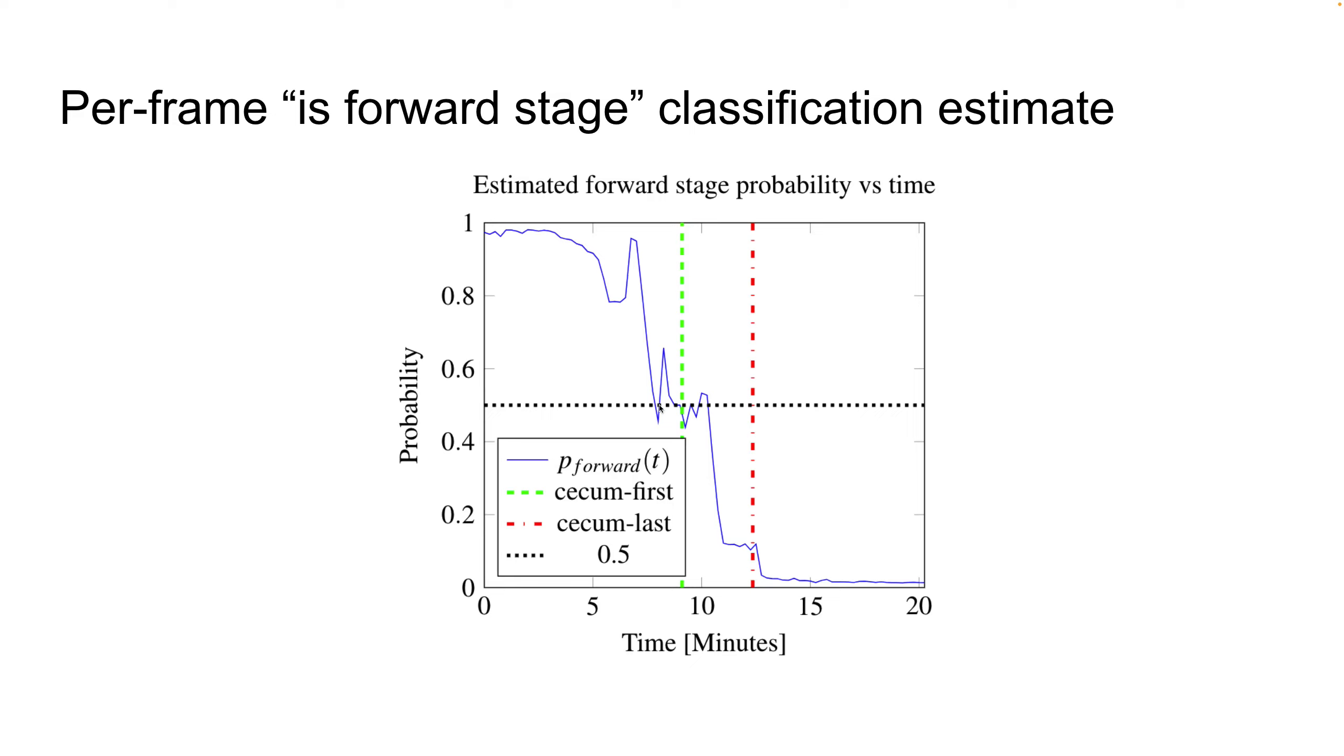So we can see at the beginning of the procedure, the algorithm predicts the frames to be in the forward stage. Something happens around the cecum first time and the probability starts to be ambiguous. Something again happens midway between cecum first and cecum last, and the probability of being in first gets lower and lower and basically almost zero after the last frame of the cecum.